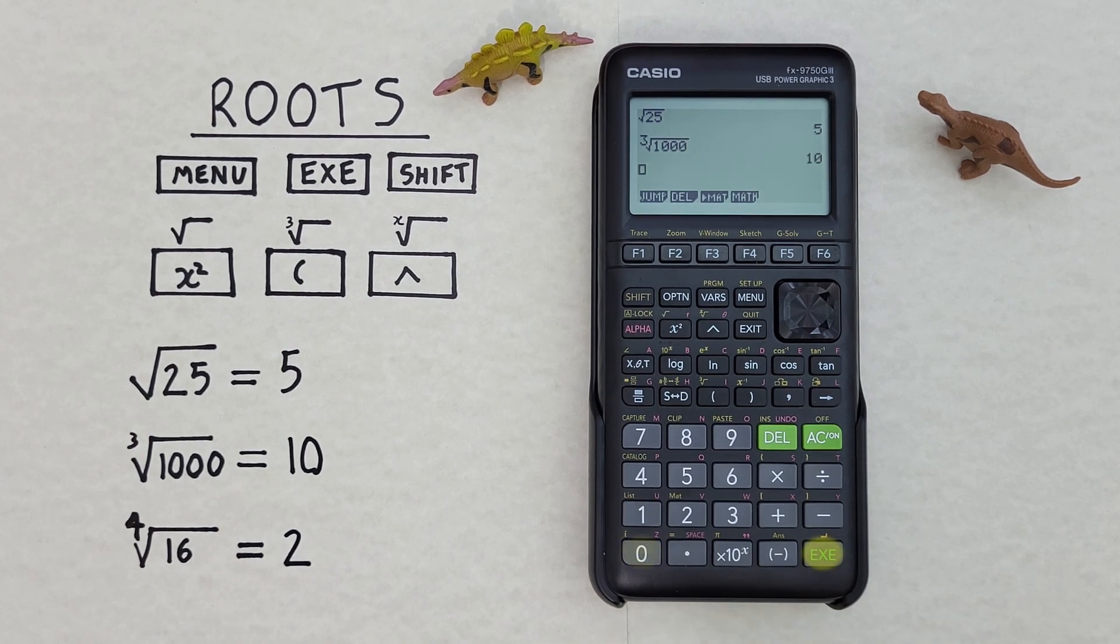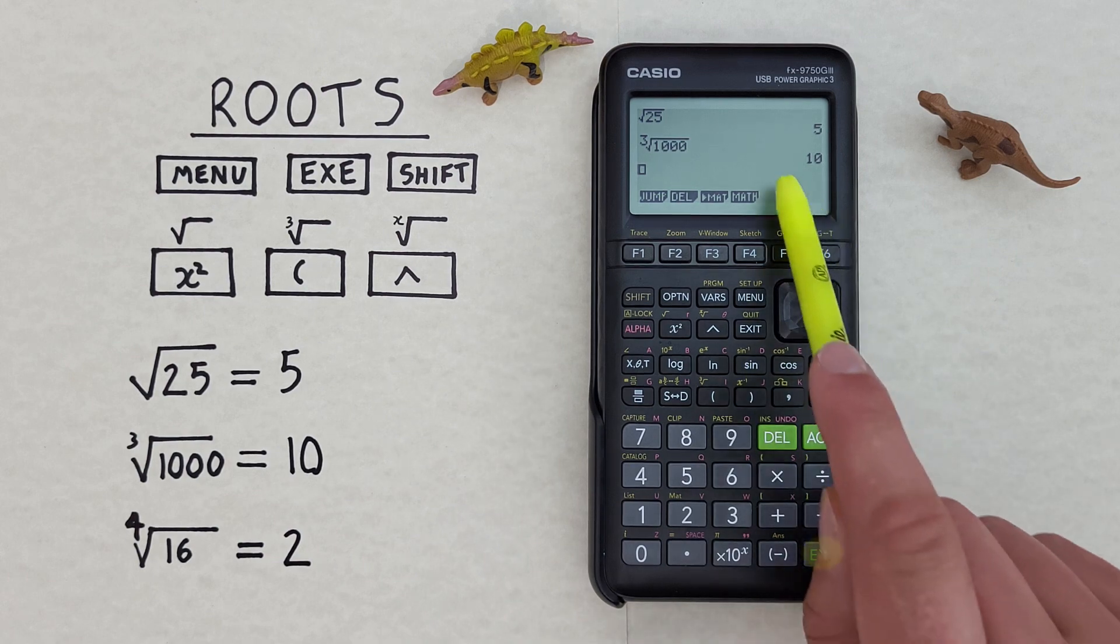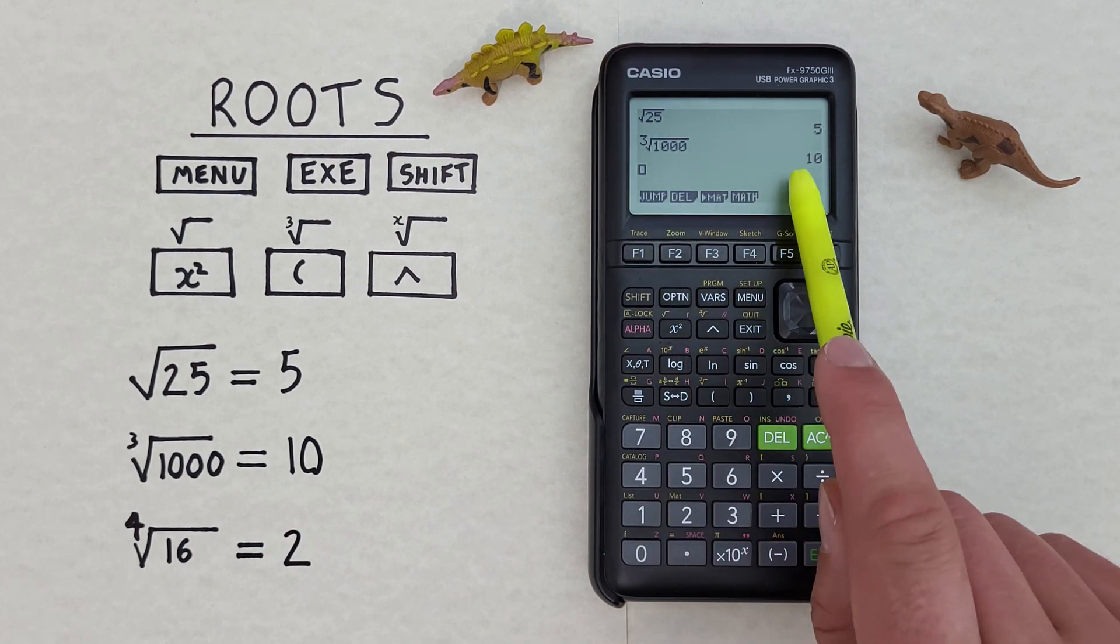And press exe. And we get 10. So the cube root of 1000 is equal to 10.